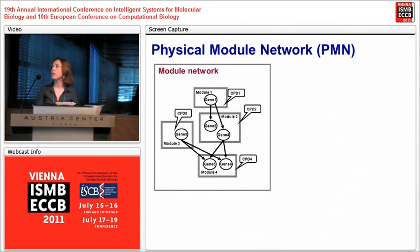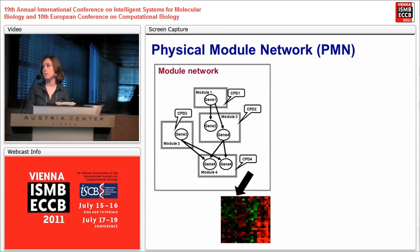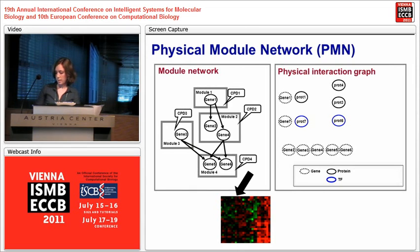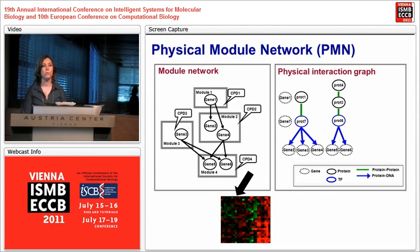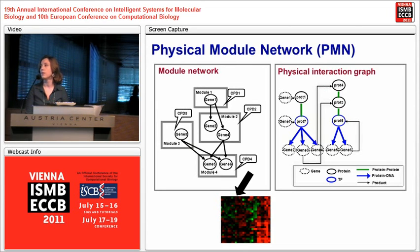The model I present today is called the physical module network, and it has two components. One is a module network describing expression data, and the other is a graph of physical interactions. This graph has nodes representing proteins and genes, with three types of edges: undirected edges for protein-protein interactions, directed edges for protein-DNA binding interactions, and directed edges from a gene to a protein representing transcription of a gene to its protein product.